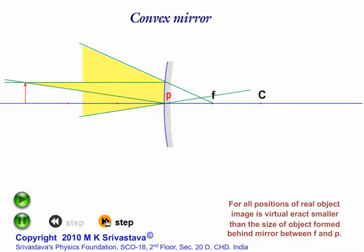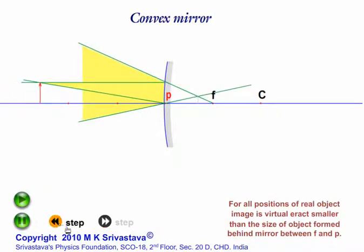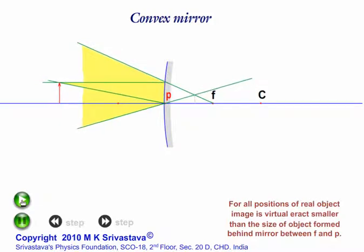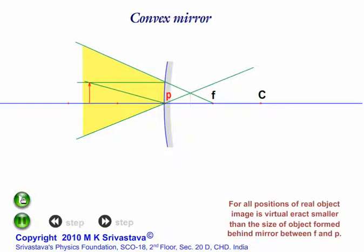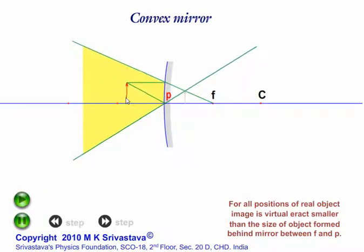These are the buttons used for step movement. As the object comes nearer to the mirror, the size of the image increases and it approaches the mirror. Finally, when the object approaches the mirror, the image size and object size become equal.